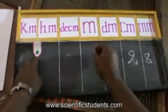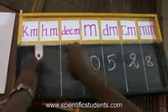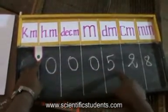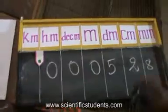Now meter is 0, decimeter is 0, hectometer is 0. Now the answer is 0.000528 millimeter is the answer.